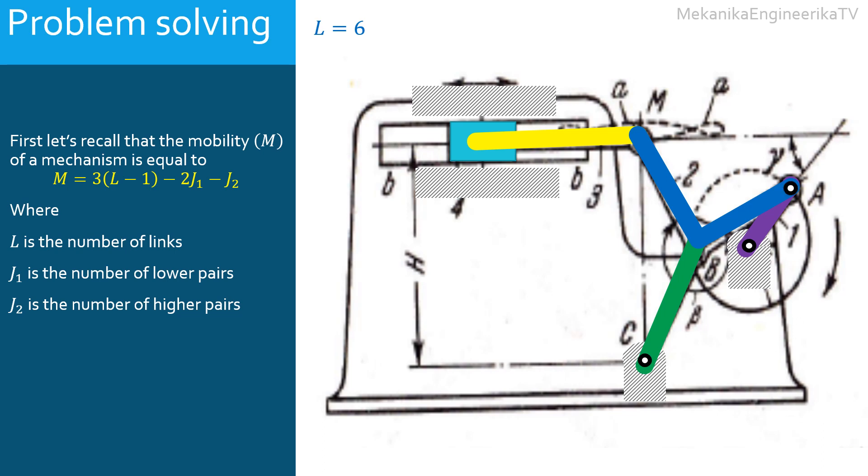One in A connecting the bar AE with the ternary link ABM. One in B connecting the bar CB with the ternary link ABM. One in M connecting the bar DM with the bar MB. And one in D connecting the bar DM with the slider.